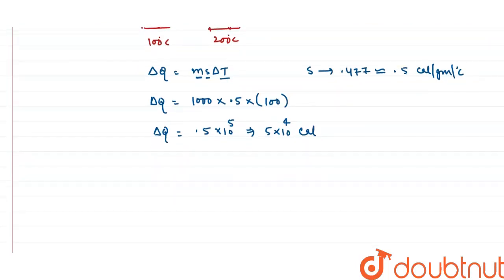Or in other words, I can also write this as delta q equals to 50 kilocalorie. So this is the heat required to change the steam of 100 degree centigrade to change the steam into 200 degree centigrade.